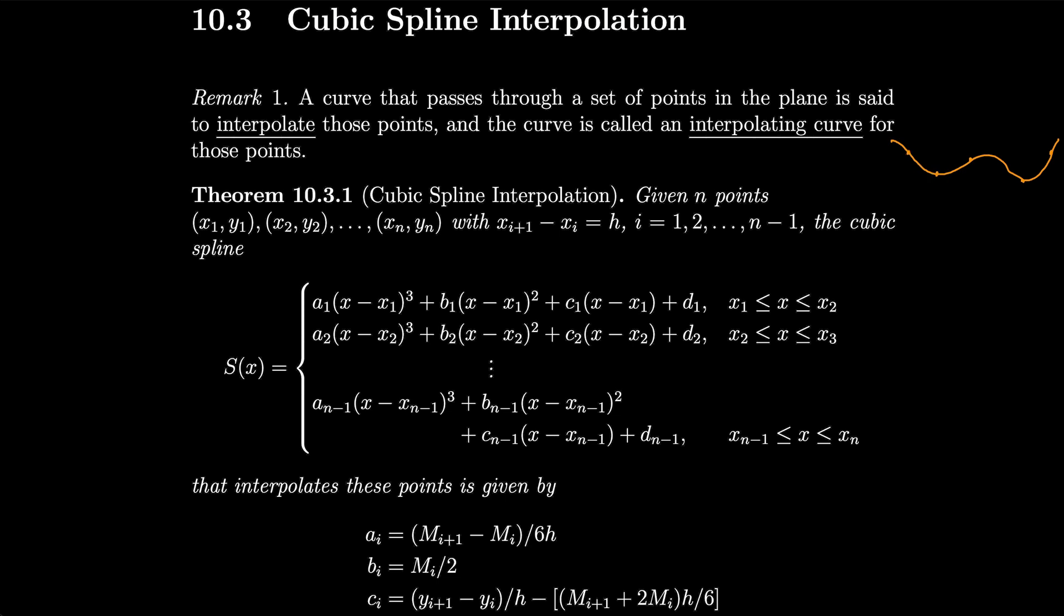So by the theorem that we have, we can see that given endpoints x1, y1, x2, y2, etc. with x(i+1) minus xi equal to h, so h is the difference between the x values through i from 1 to n minus 1.